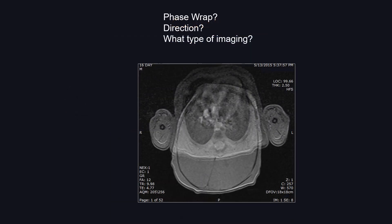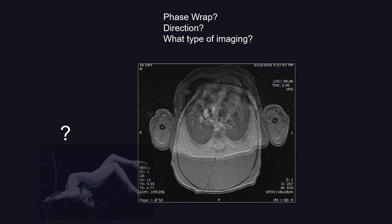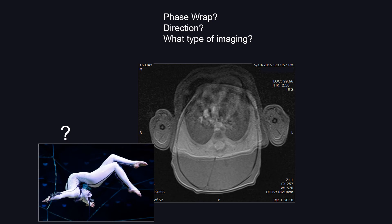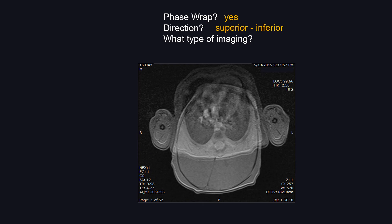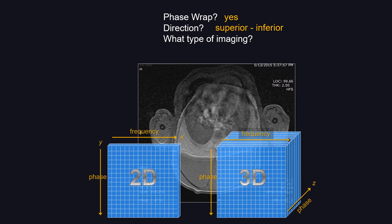What about this image showing a brain with what looks like a body — spine, upper extremity, chest, lung — wrapping around the head region? This is 3D imaging. Remember, 3D imaging has an additional phase encoding step in the z-axis. Therefore, the wraparound artifact can also occur along the z-axis — superior to inferior in this case.